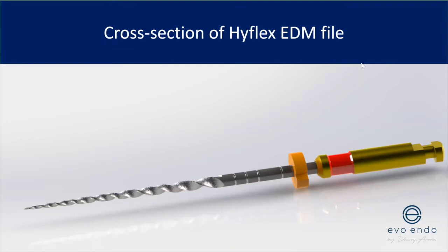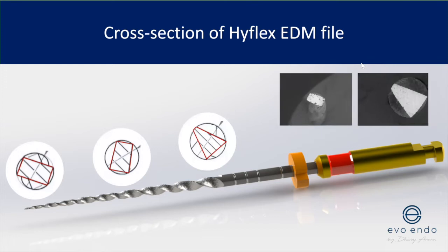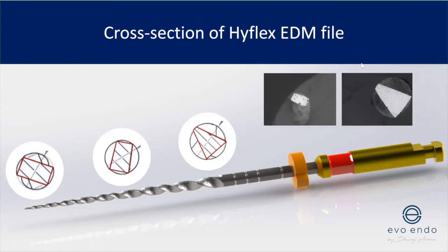What do I use? I use HyFlex EDM files — the one file — but I never generally use just one file. I use a combination: glide path files, preparation files, the one file, and finishing files. What I love about the system is you've got multiple files so you can plan your root canal treatment to what the root canal system asks of you, rather than tailoring your preparation to what the manufacturer tells you. It also has different cross-sections along its length where it needs to cut more efficiently.